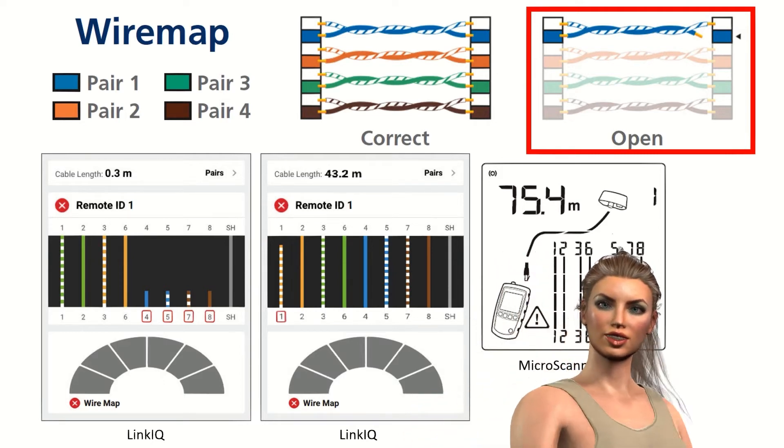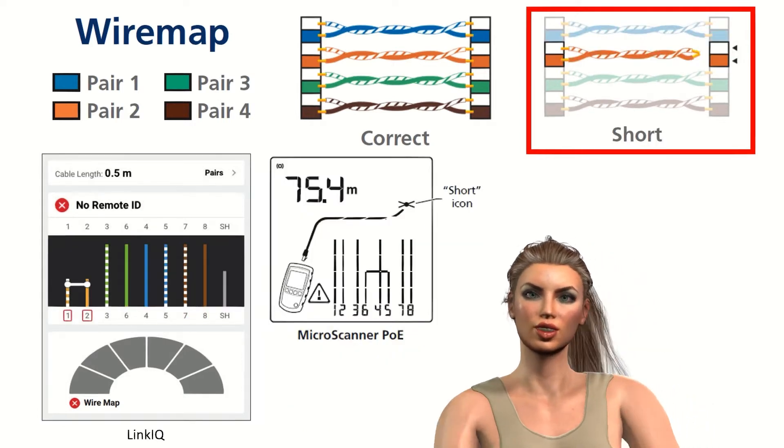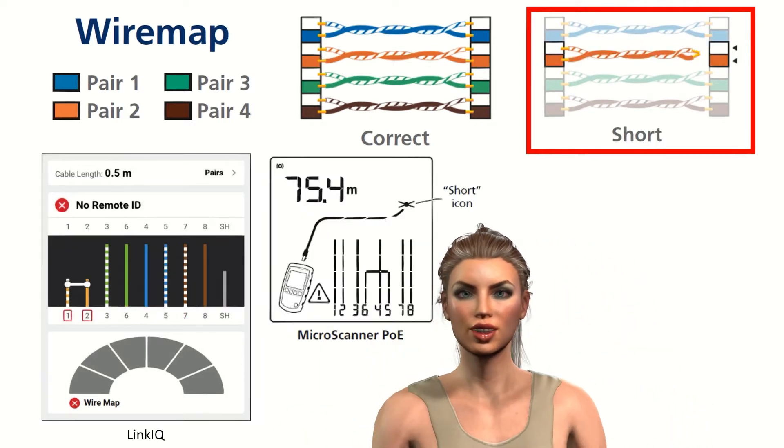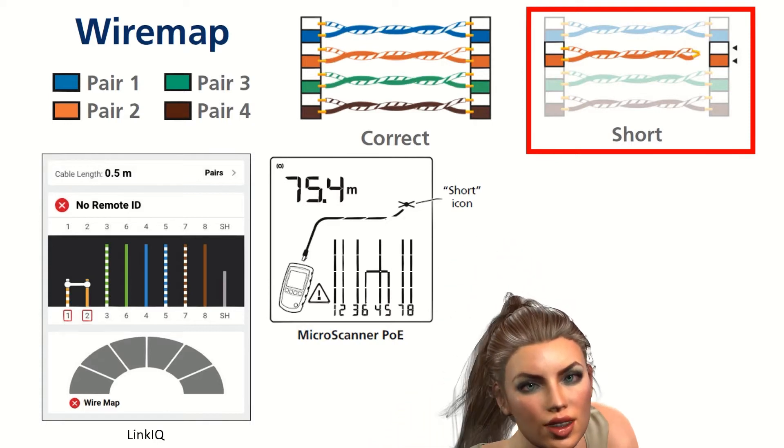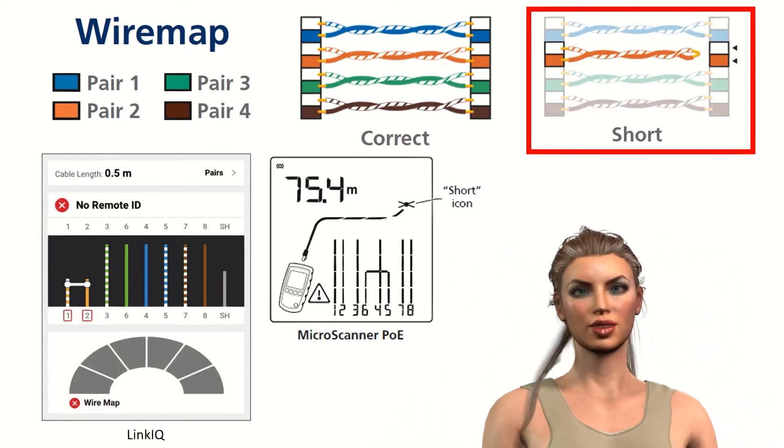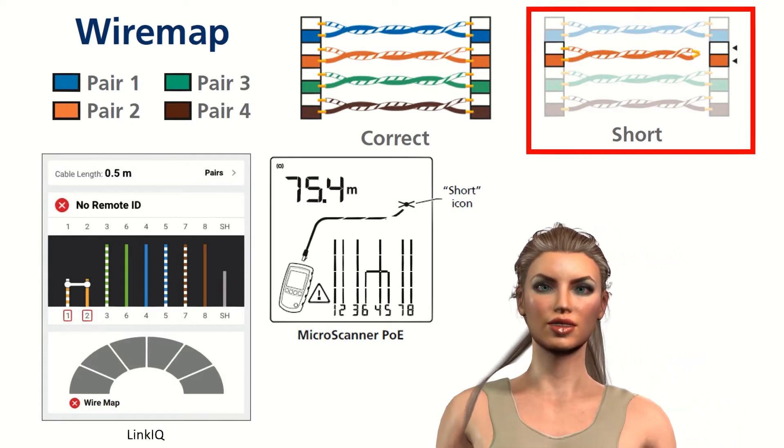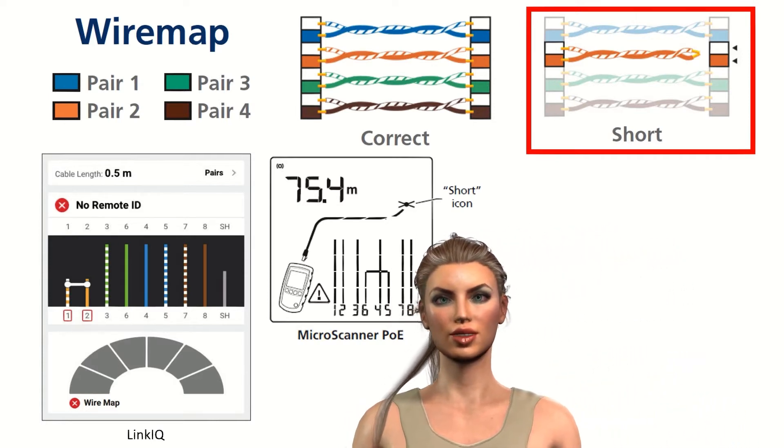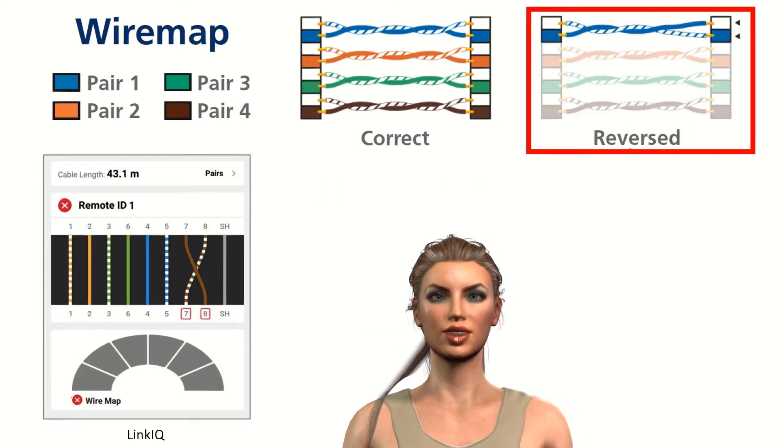Shorted cables: this happens when two conductors are connected to each other in such a way that in this case the signal from one cable would pass to the other conductor. We can have this problem between the two cables of the same pair or between cables of different pairs.